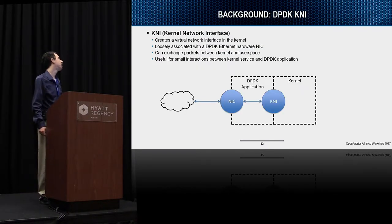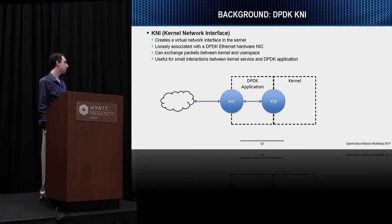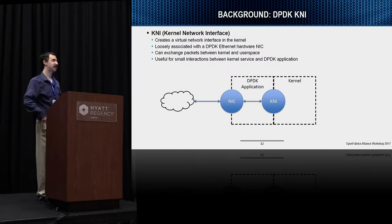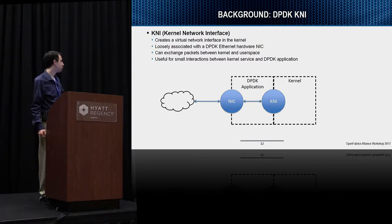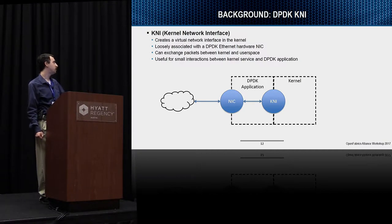One final background topic: DPDK has a library called KNI which allows you to present a virtual NIC to the kernel. We use this to allow the kernel to send messages onto the network — since verbs does its connection management in the kernel, this is how we enable the kernel to send messages out on the wire. The NIC is bound to DPDK and talks to the outside world, there is also a KNI interface from DPDK to the kernel, and the DPDK application itself is responsible for shuffling messages back and forth.